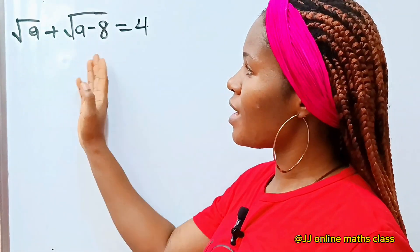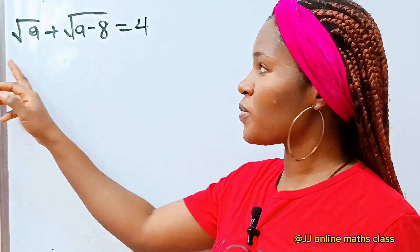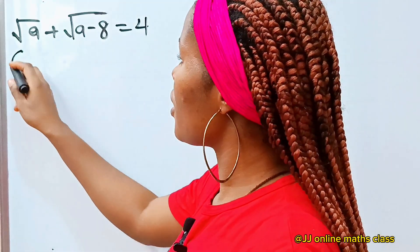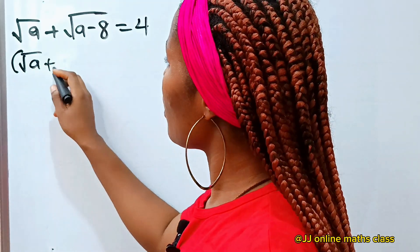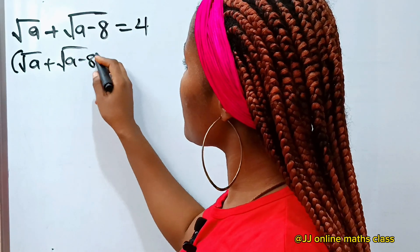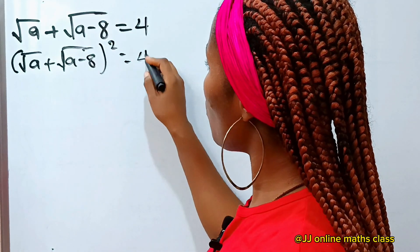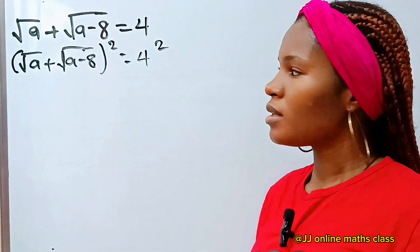To solve this, let's square both sides of this equation because we are seeing a square root sign. So it's going to be: square root of a plus square root of a minus 8, all squared, is equal to 4 squared.